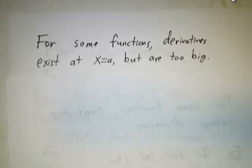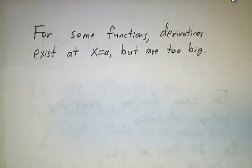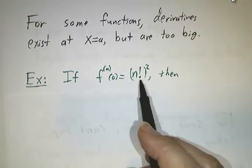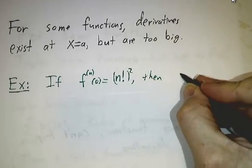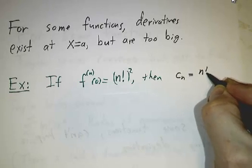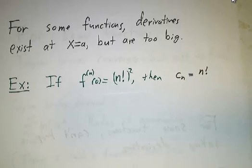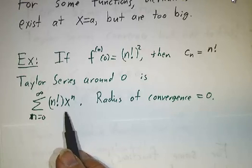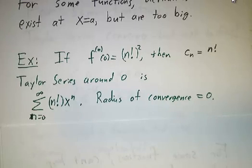There are other functions where you can take the Taylor series. All of the derivatives exist. The 139th derivative, the 3 millionth and fourth derivative, they all exist, but they grow too quickly. So for example, imagine that you had a function whose nth derivative at the origin was n factorial squared. Well, that would tell you that the nth coefficient of the Taylor series would be n factorial squared over n factorial, and that's just n factorial. So the Taylor series would become the sum of n factorial times x to the n. But by the ratio test, the radius of convergence of that series is 0. The series just doesn't converge anywhere except right at x equals 0. So the Taylor series doesn't work.